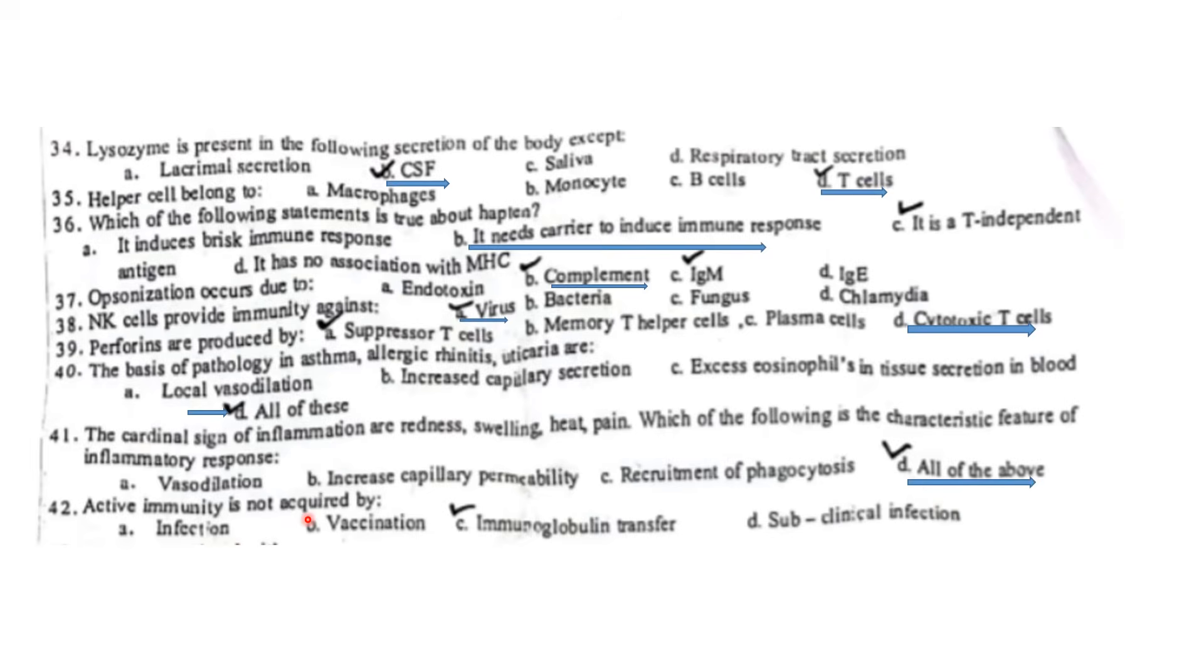Active immunity is not acquired by immunoglobulin transfer. Active immunity is due to antigens. Immunoglobulins are antibodies. CD4 cells are associated with helper T cells. The following function of complement is correct: the complement system performs all the functions. Which organism kills or inhibits the growth of another microorganism? It is called microbial antagonism.